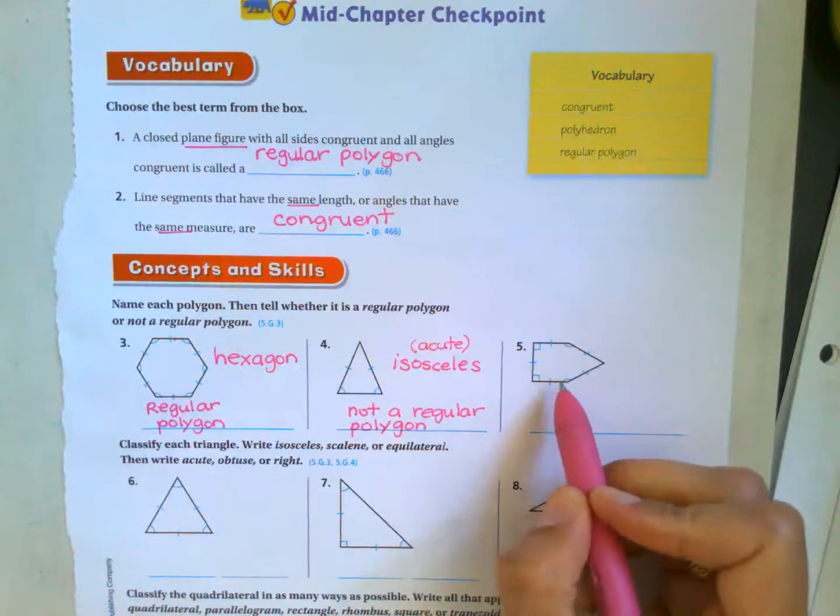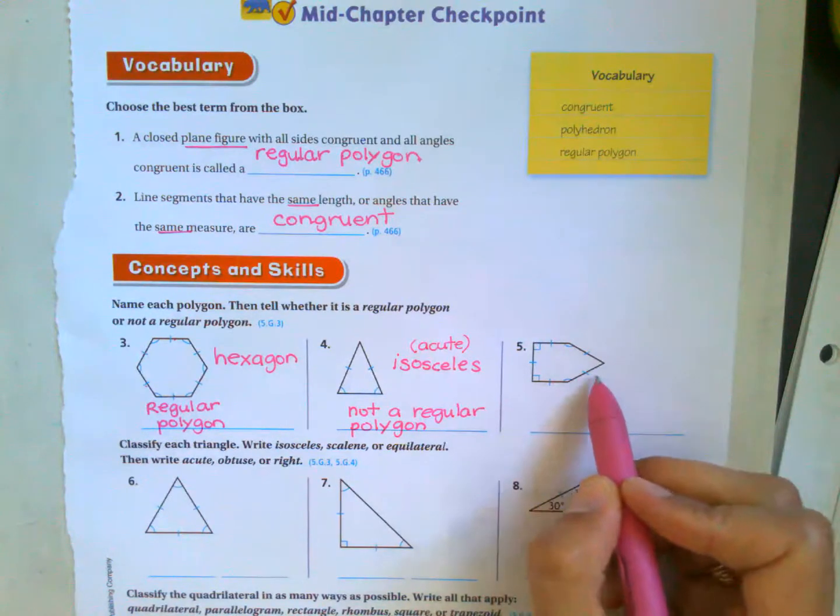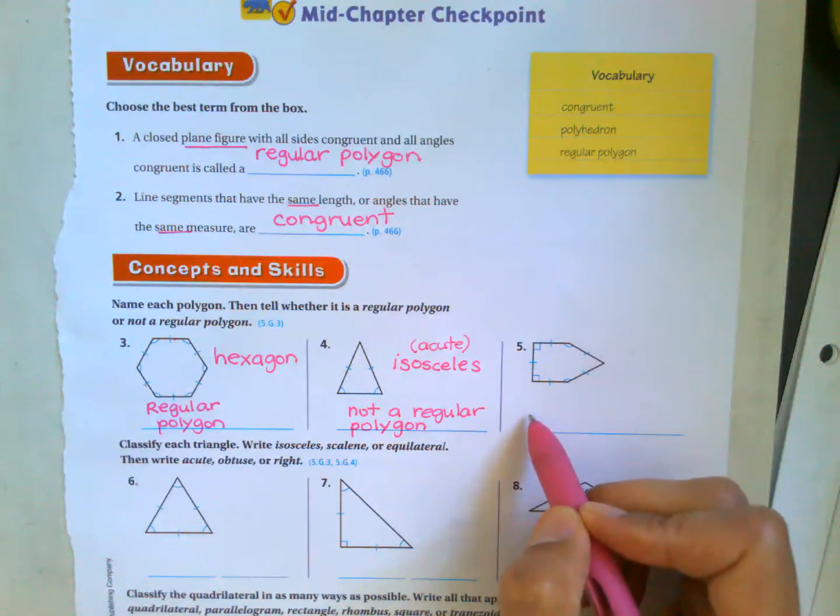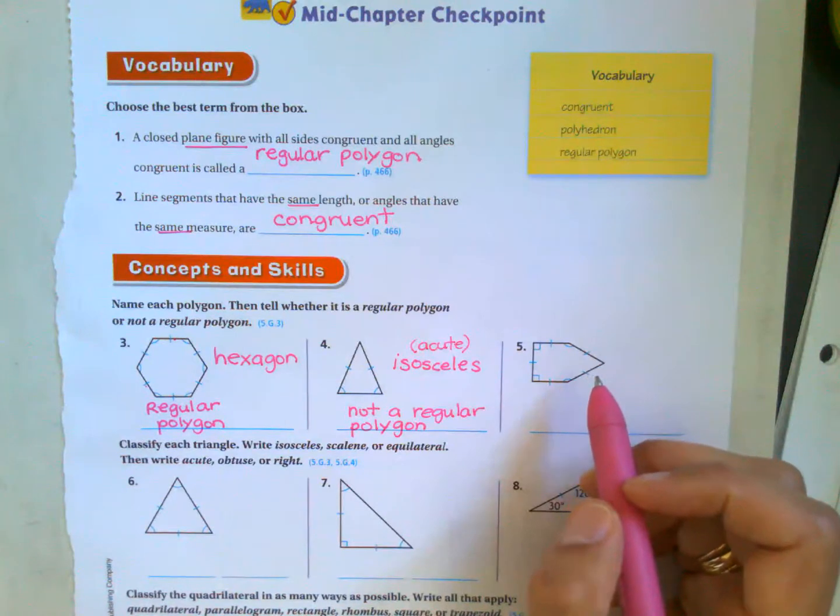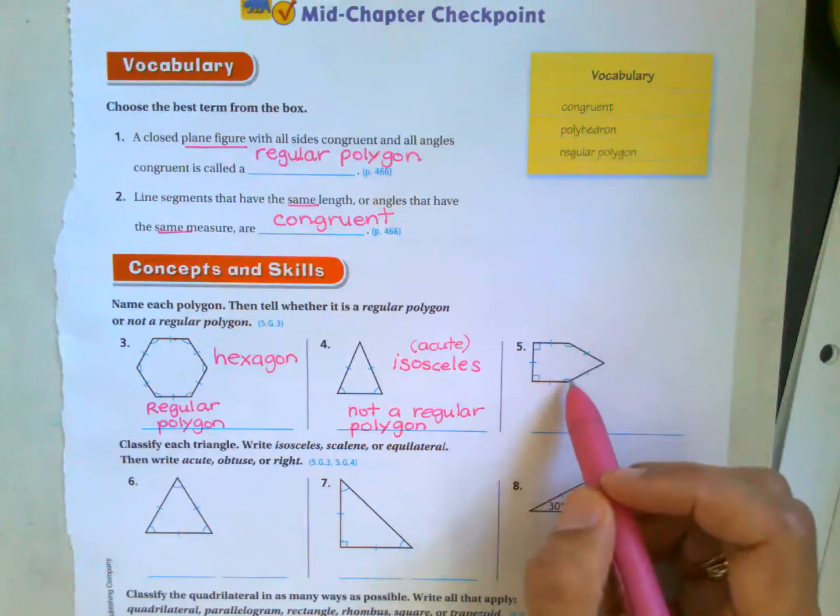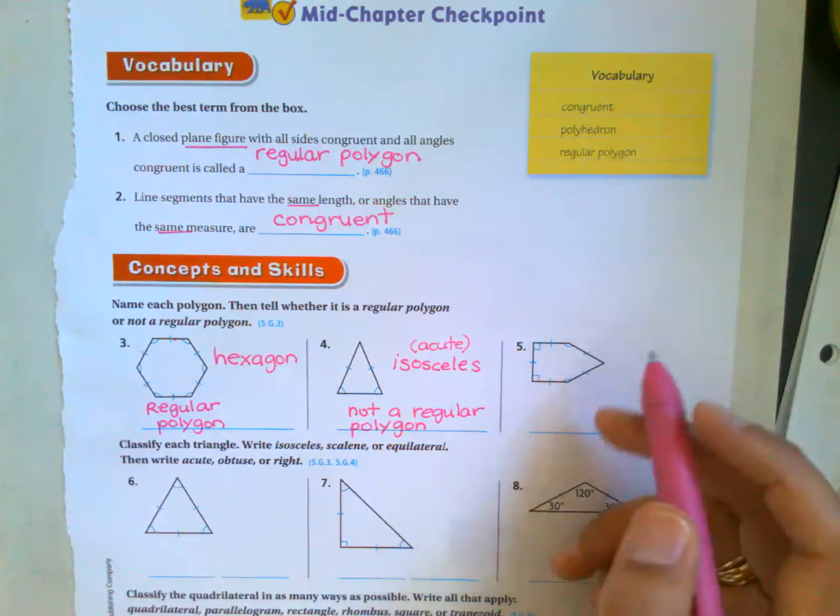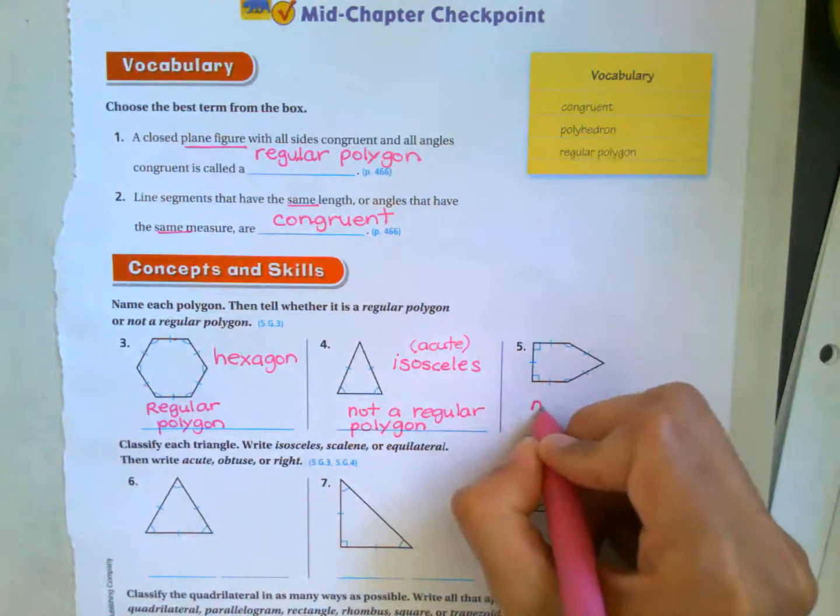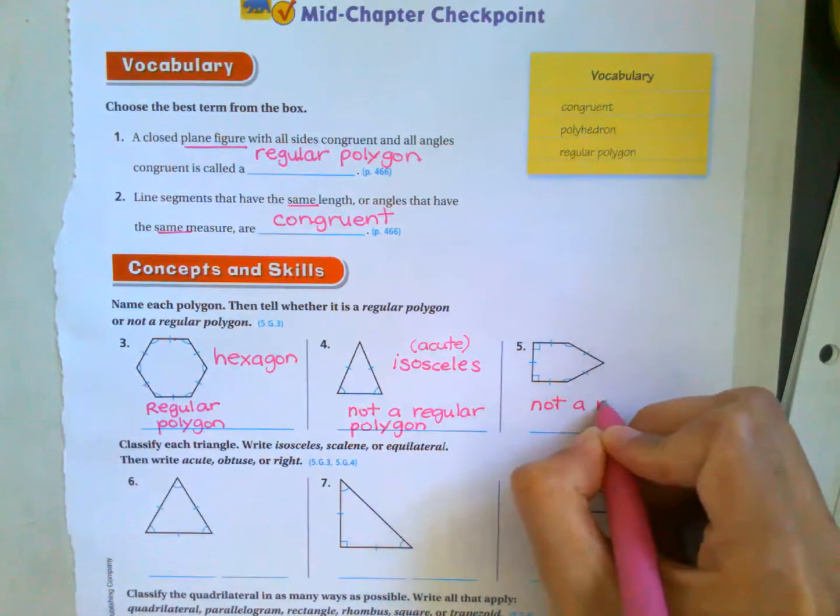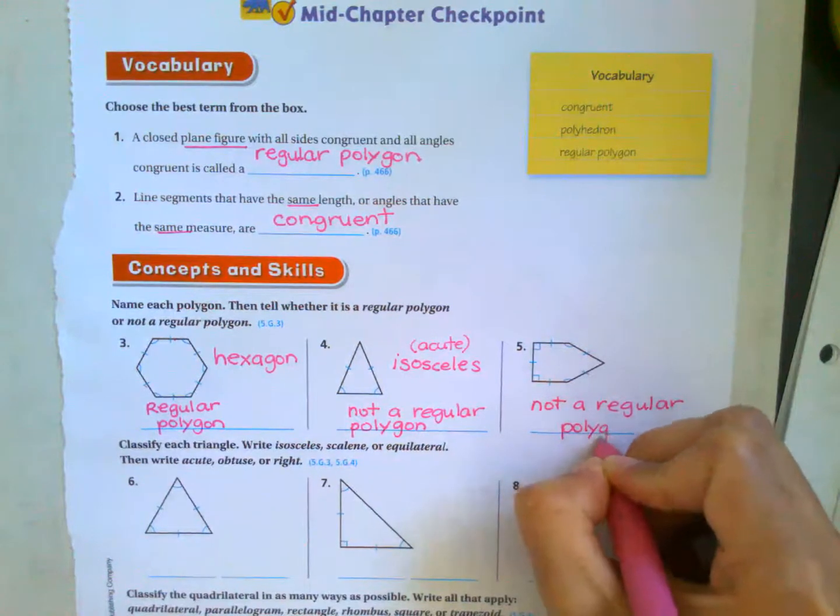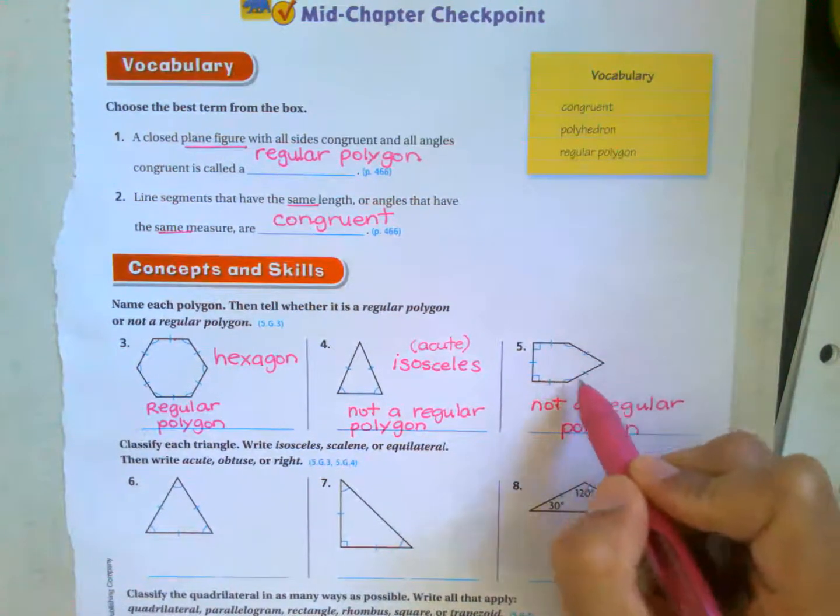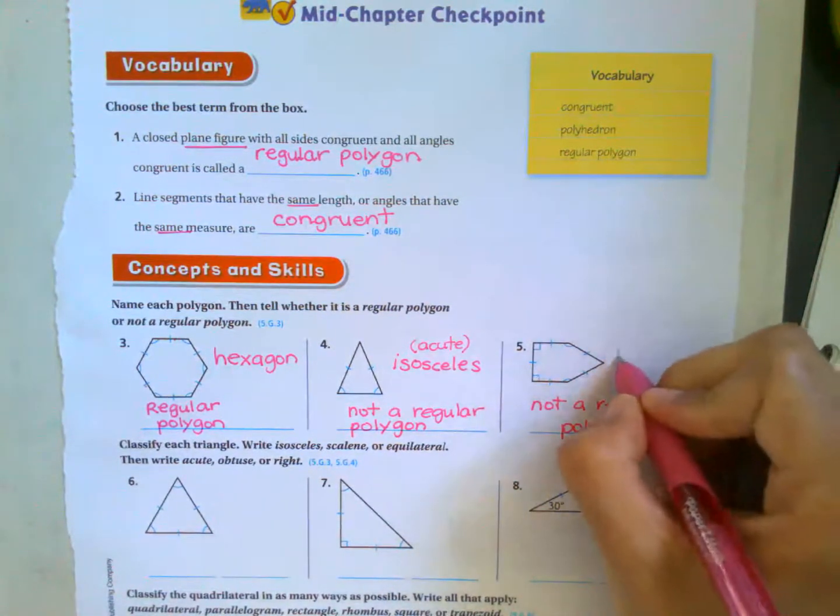Let's look at this figure. This has all the sides are congruent. But all the angles are not congruent because these angles match. These two angles match, but they're different from those. So this is not a regular polygon. And if I were to name this shape, one, two, three, four, five, this would be a pentagon.